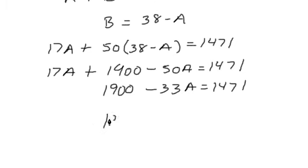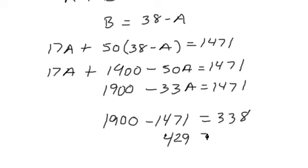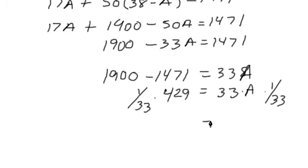Solving for A, I'm going to take this 1471 over to the left. So we have 1900 minus 1471, and that gives us 429 equals 33A. Multiply both sides by 1 over 33. We've got to get a 1 there in front of that.